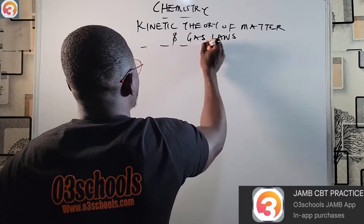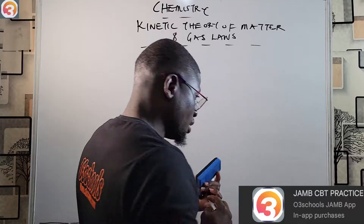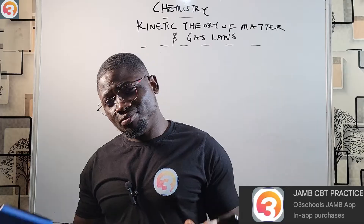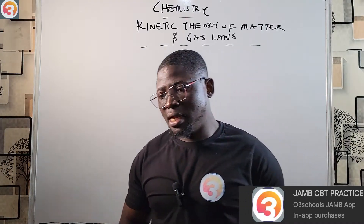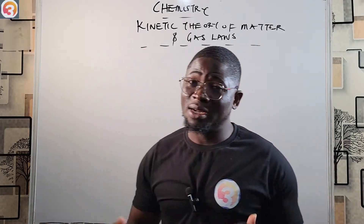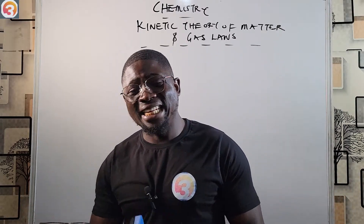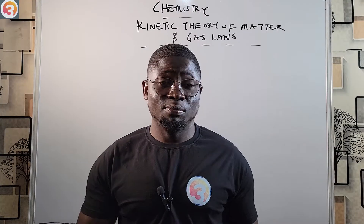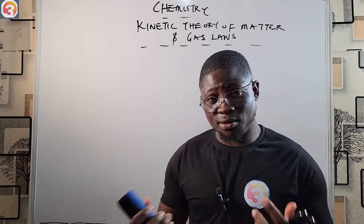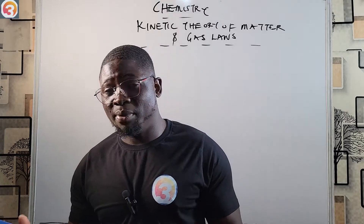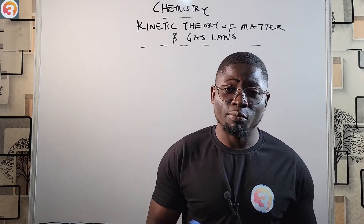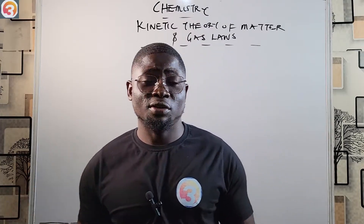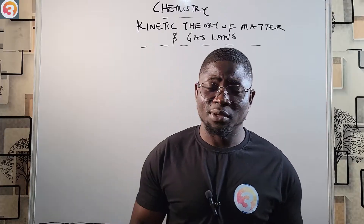There are many important questions that come from this topic, and there are some very salient points that come up in your exam. That is why you should not take any topic in chemistry lightly. You may say this topic is easy, but something can trip you up — like the graph representing Charles' law or Boyle's law. How do you identify a graph and know whether it is talking about Charles' law or Boyle's law? This is what we will be looking at.